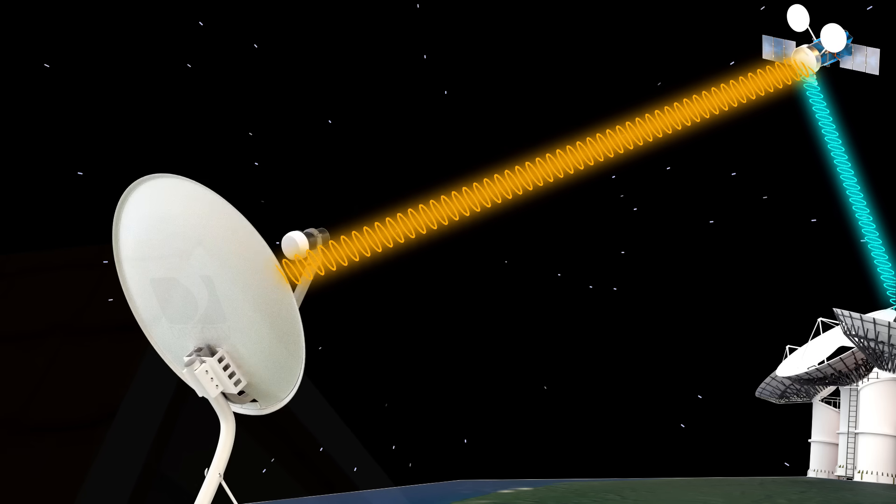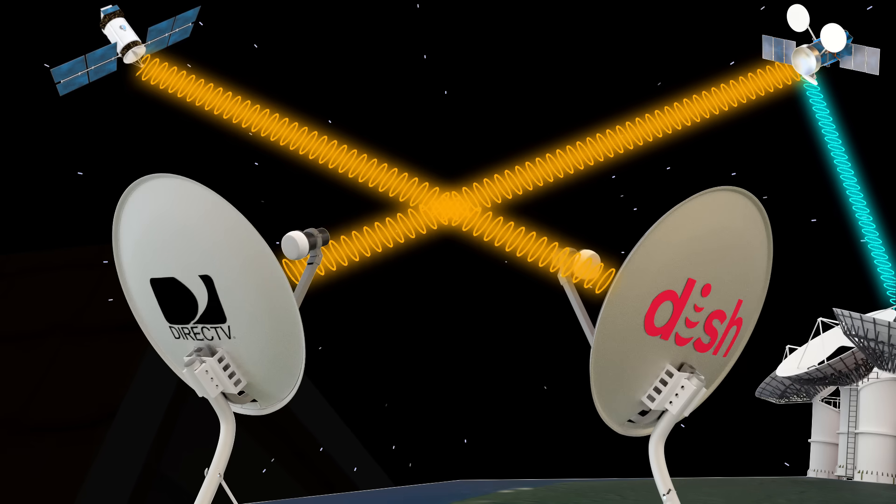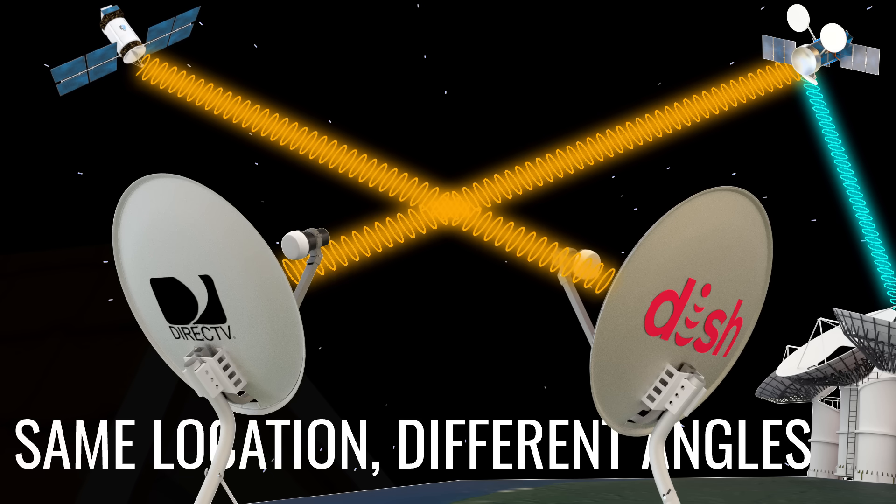You might have seen that for different DBS providers, there are different angles for the dishes, even if the dishes are all in the same location. This is because the different providers might be using different satellites for transmitting their signals.